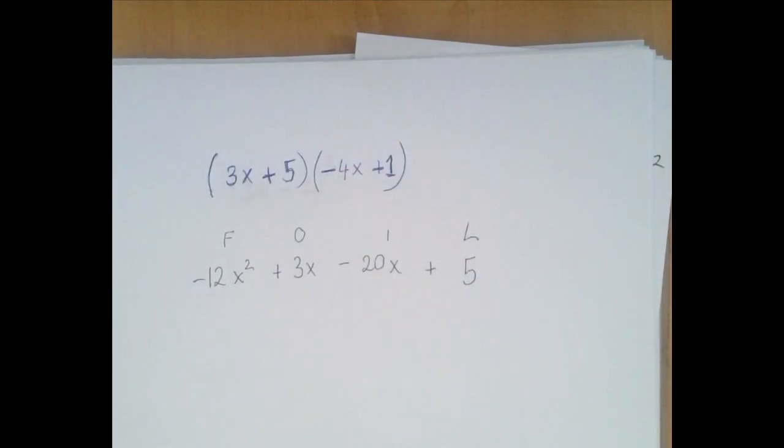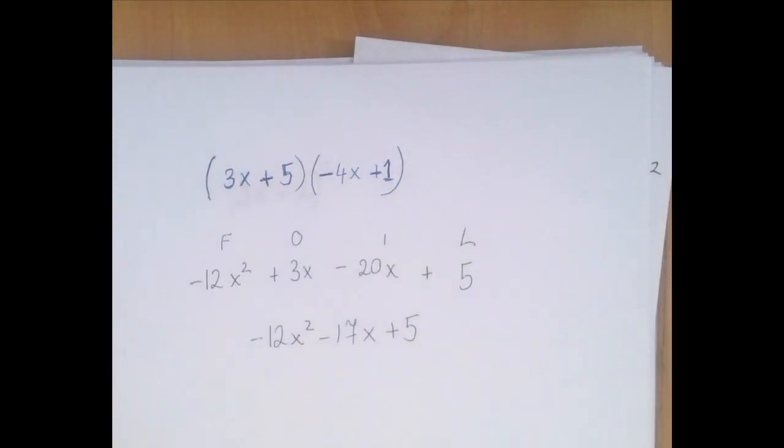Now we're going to combine like terms. Negative 12x squared and 3x are not like terms. And 3x and 5 are not like terms. The only like terms here are these two. Plus 3x and negative 20x can be combined to negative 17x. So the answer is negative 12x squared minus 17x plus 5.